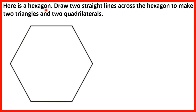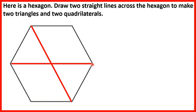Here is a hexagon. Draw two straight lines across the hexagon to make two triangles and two quadrilaterals. A triangle is a shape with three sides, and a quadrilateral is a shape with four sides because quad means 4. We can draw a straight line here and then a straight line here, and we have two triangles and two quadrilaterals — two shapes with four sides. There are lots of different possible answers for this question.